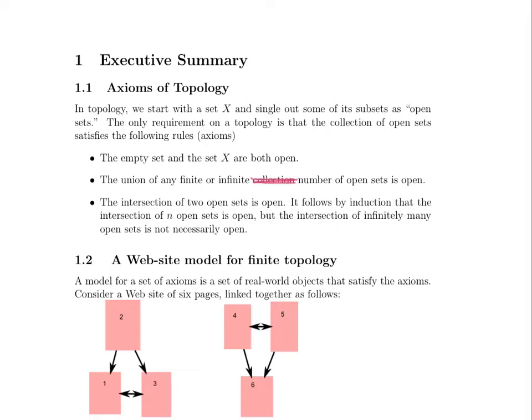Also, the intersection of two open sets is open. It follows by induction that the intersection of n open sets is open, but be careful here. The intersection of infinitely many open sets is not necessarily open, and we'll get to an example of that in just a moment.